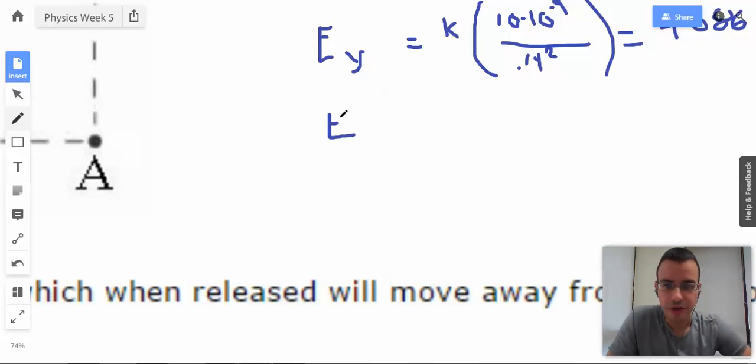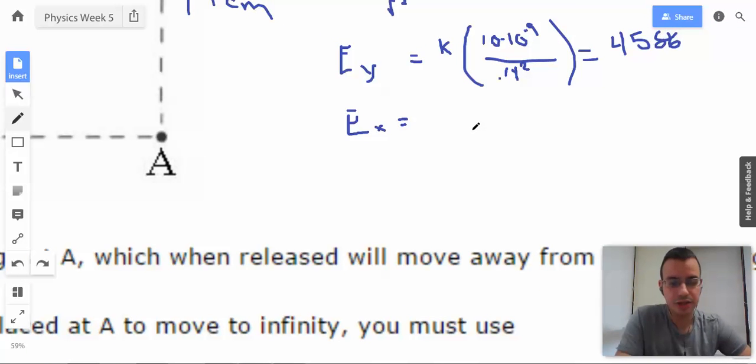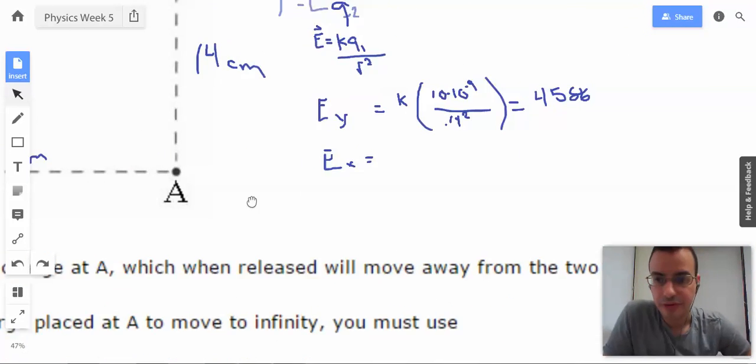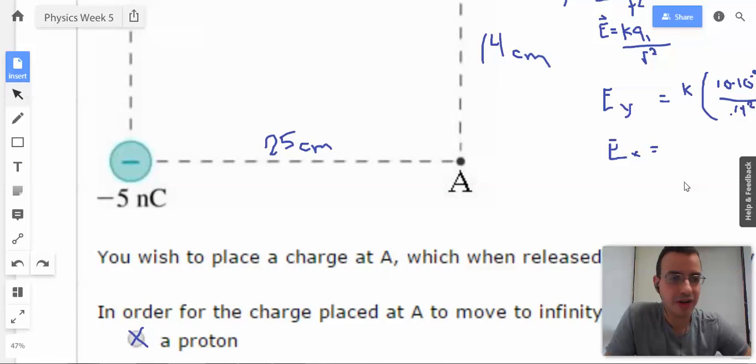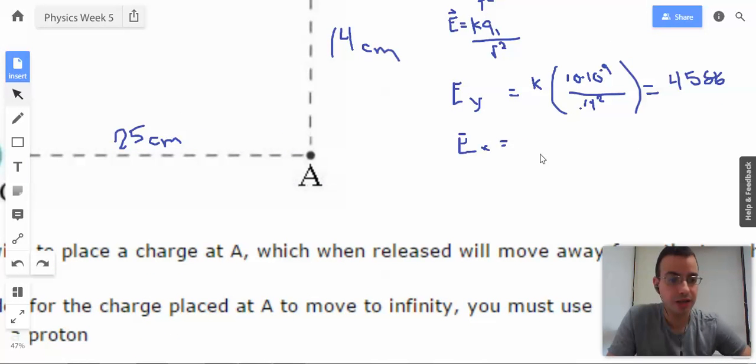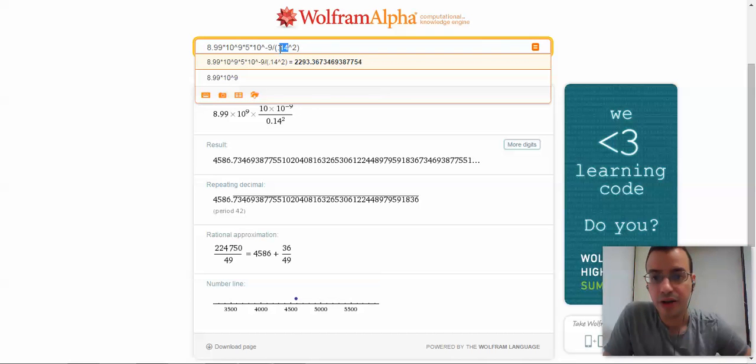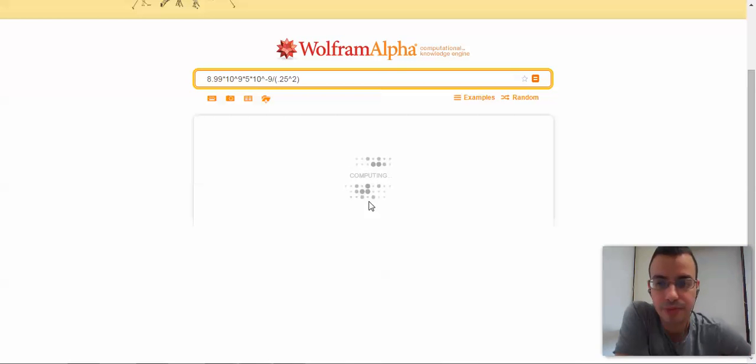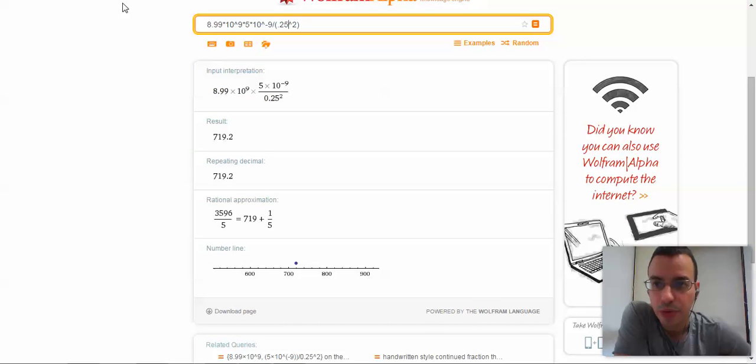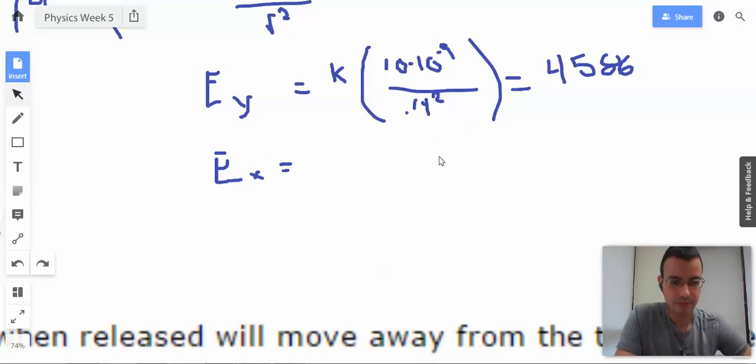Now we're going to do electric field in the x direction. Same concept. This time we're going to have 5, negative 5. I'm just going to write 5 because all I'm going to care about here is the magnitude. And then 0.25. And I have 719.